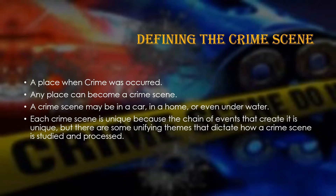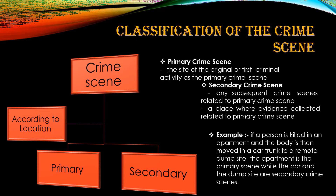Now we will look into the classification of the crime scene. Crime scenes are divided into two types: first is the primary crime scene and the second is the secondary crime scene. There is also a classification based on location. The primary crime scene is the site of the original or first criminal activity. The secondary crime scene is any subsequent crime scene related to the primary, or a place where evidence related to the primary crime scene was collected.